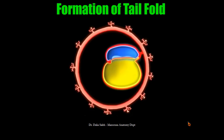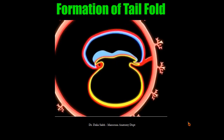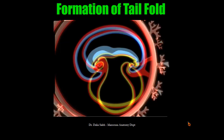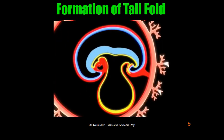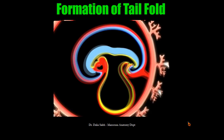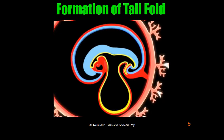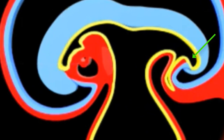What happens during the formation of the tail fold? Due to bending of the embryo in the ventral direction because of the growth of the neural tube and the somites, the allantois and the connecting stalk move ventrally. Part of the endoderm will be trapped into this tail fold. When the allantois moves ventrally, it drags part of the endoderm with it and forms a sac behind it called the cloaca.